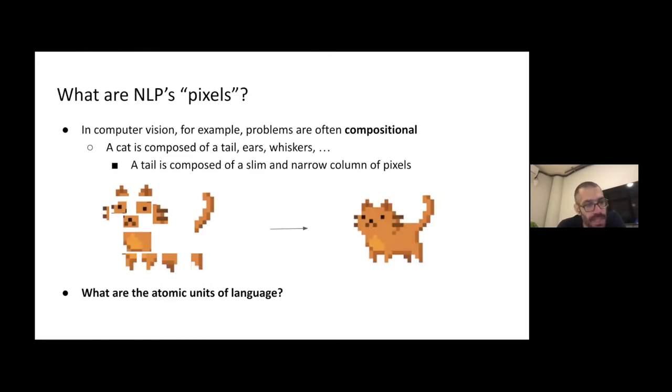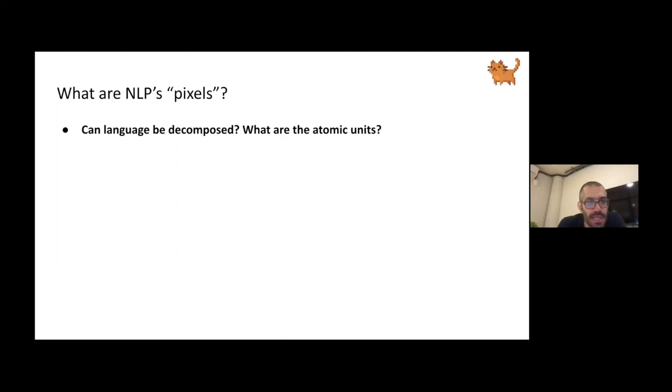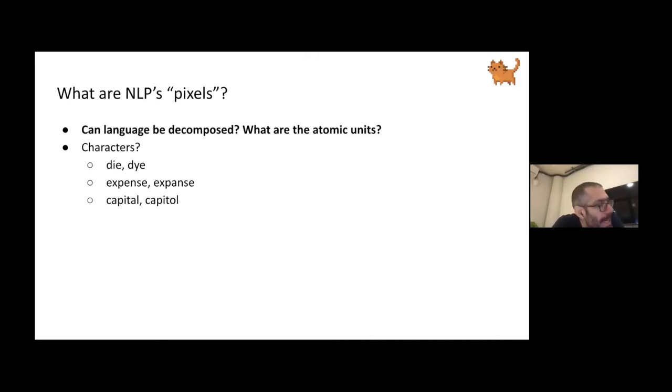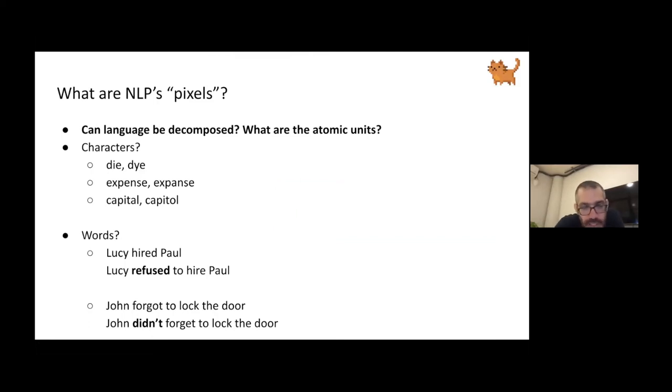A major question these days in NLP is what is a similar analogy in language. What are the atomic units of language? If you're thinking about this the first time, maybe you can say that characters are the atomic units of language. But if you think about it and look at these pairs of words, we change one character or one pixel and we completely change the meaning. For example, dye with an I is very different from dye with Y. This would be similar to taking a picture of a cat, changing one pixel and making it a picture of a dog.